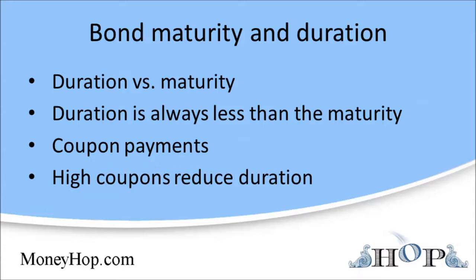Let's illustrate this with an example. Take two bonds that both mature in 10 years. One makes semi-annual interest payments equal to the current market rate of 10% and repays its face value of $1,000 at maturity. The other bond is sold initially at a deep discount to its face value. It makes no interest payments for 10 years, but at the end of 10 years, it pays the full face value of $1,000. This is a so-called zero-coupon bond and is similar to a U.S. EE savings bond.